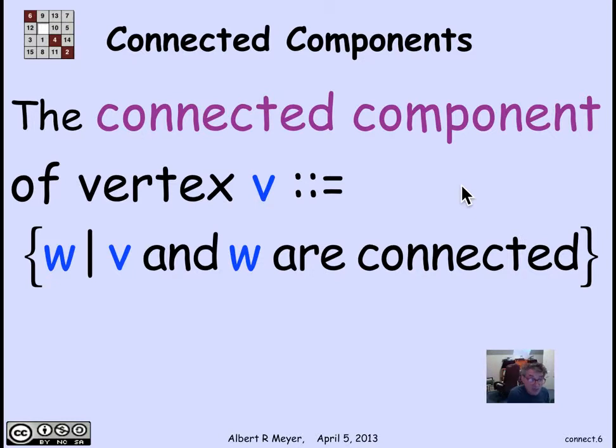And if you look at these connected components, they define an equivalence relation on the vertices, because a connected component is a block of the equivalence relation. It's a block of the partition associated with the equivalence relation.